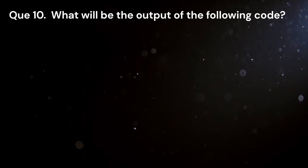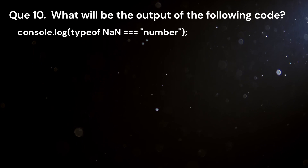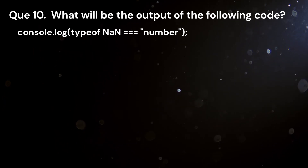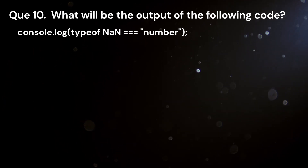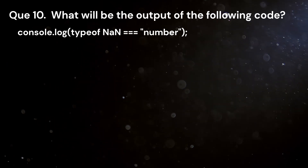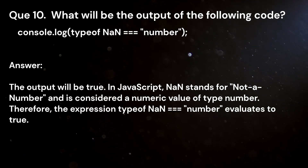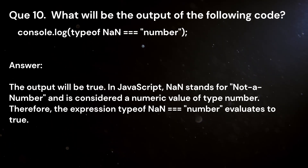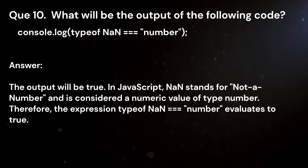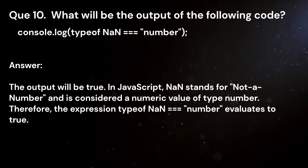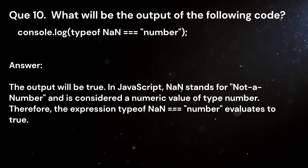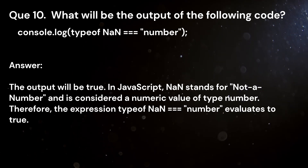Question 10. What will be the output of the following code? console.log(typeof NaN === "number"). Answer. The output will be true. In JavaScript, NaN stands for Not a Number and is considered a numeric value of type number. Therefore, the expression typeof NaN === "number" evaluates to true.